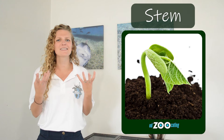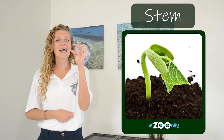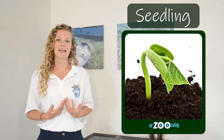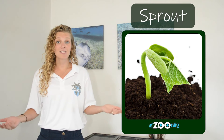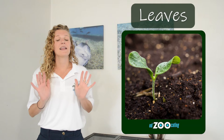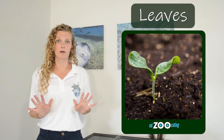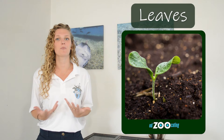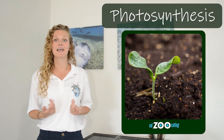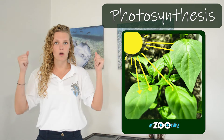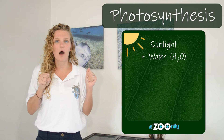Instead of growing down like the roots, the stem grows up towards the Sun. When it breaks through the soil and we have this tiny little baby plant, we call it a seedling or a sprout. Eventually that seedling grows and grows and develops leaves, and leaves are very important to a plant because that is where the magical process of photosynthesis takes place.